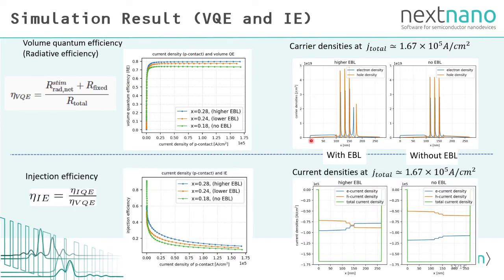On the other hand, injection efficiency decreases as the current density is increased. However, as in the case of volume quantum efficiency, the introduction of blocking layers improves this injection efficiency. What affects this is the current density distribution. The amount of steps in the current density distribution corresponds to the amount consumed by the recombination.